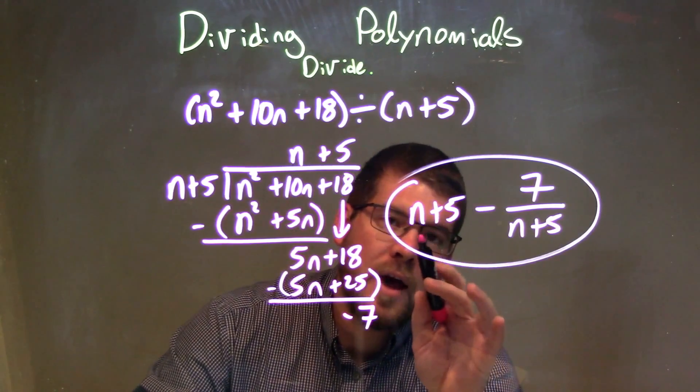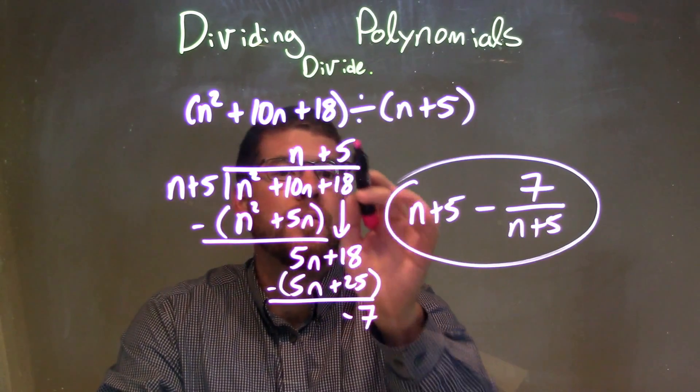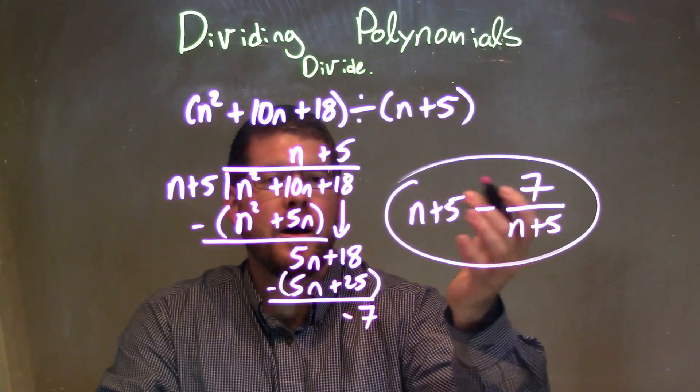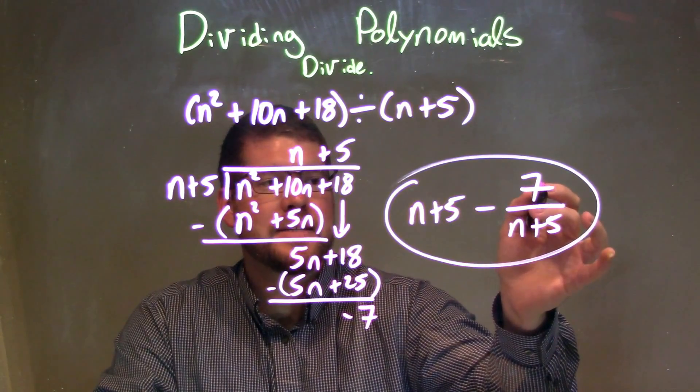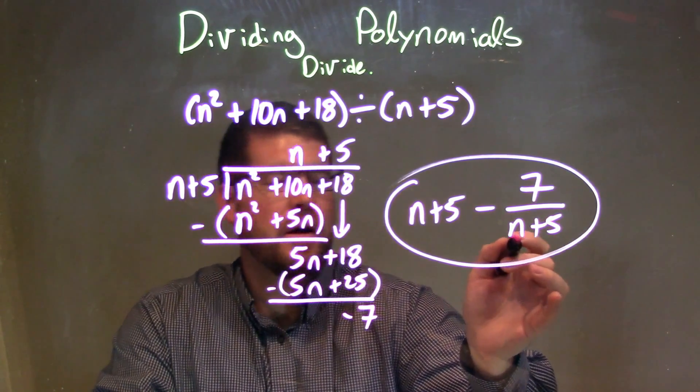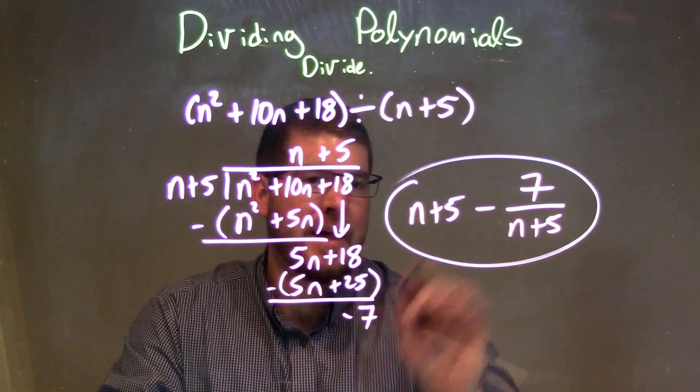We're done at this point. So we have n plus 5, what was written up here, minus our remainder, minus 7, over our divisor, n plus 5. And that is our final answer.